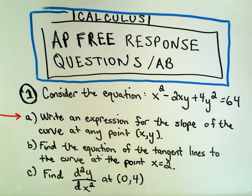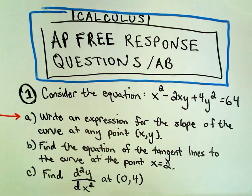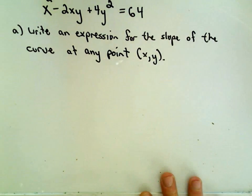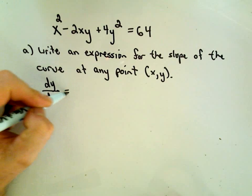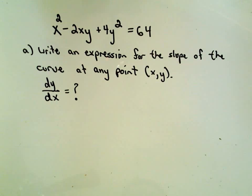Part A that I'm going to do in this video is to write an expression for the slope of the curve at any given point. So basically, we have to find a formula for the slope of the tangent line. Well, really what we want to find is dy/dx, or y prime, simply a formula for that.